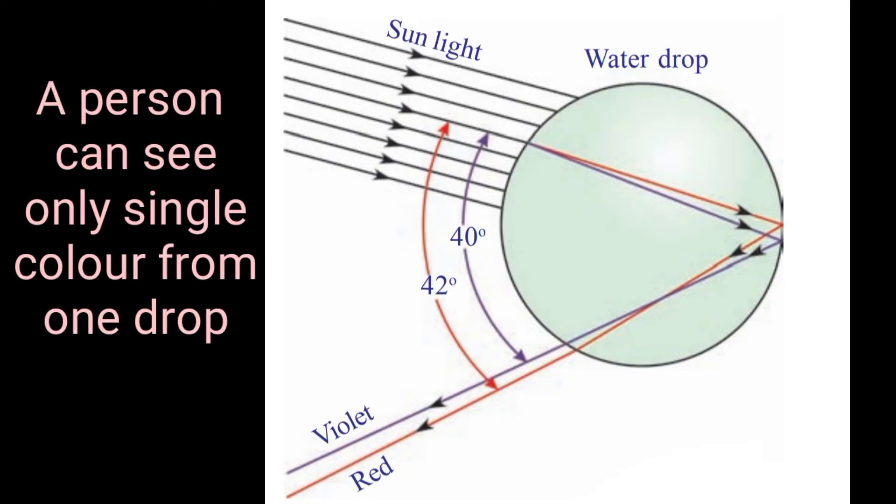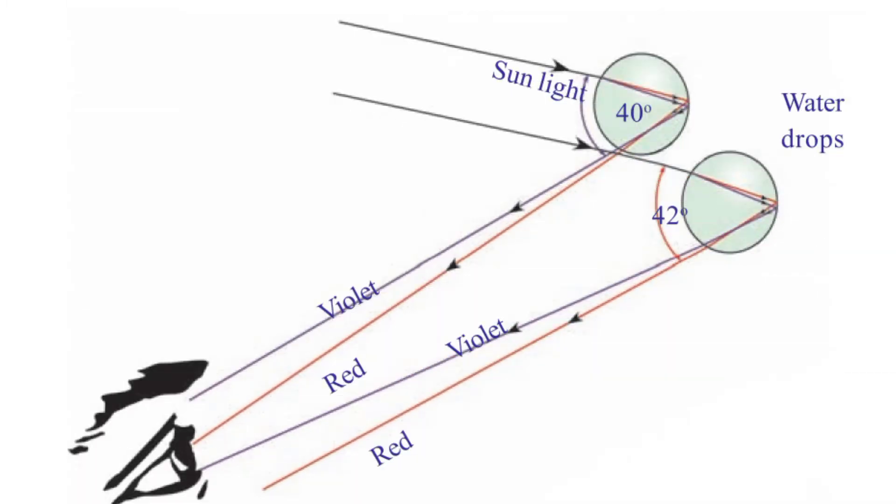An observer in a position can see only single color from any one drop depending on its position. We can see only one color from one water drop. If violet color light from a single drop reaches the eye of observer, red light from same drop cannot reach his eye. Remaining colors go downward of the eye of observer.